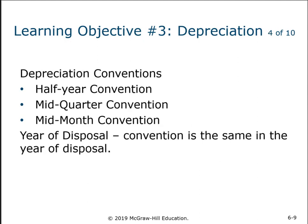The half-year convention means just half of the depreciation you would get if you had the asset for the whole year. We assume all assets were bought halfway through the year, and similarly in the year we get rid of it. We don't have to calculate specific days.